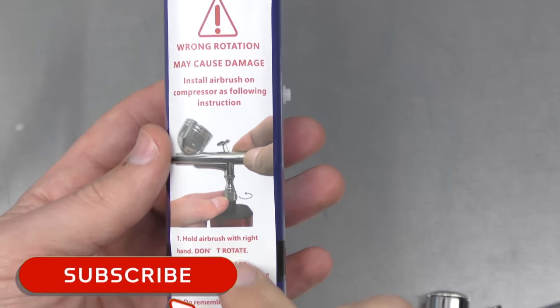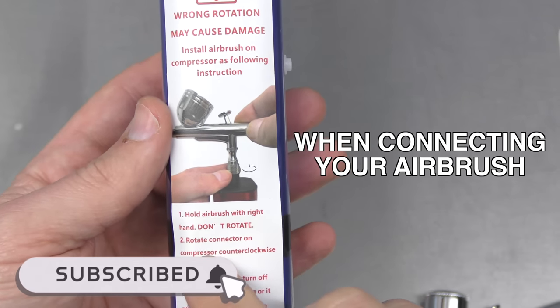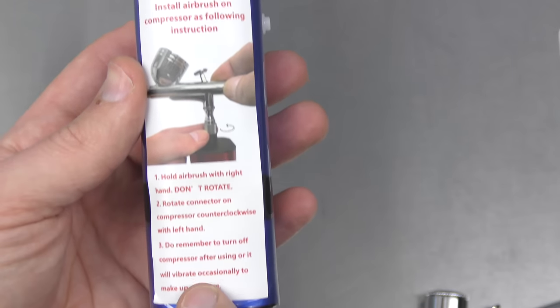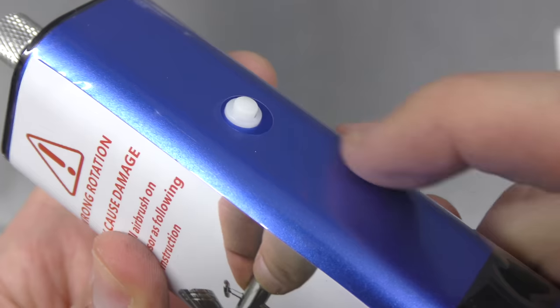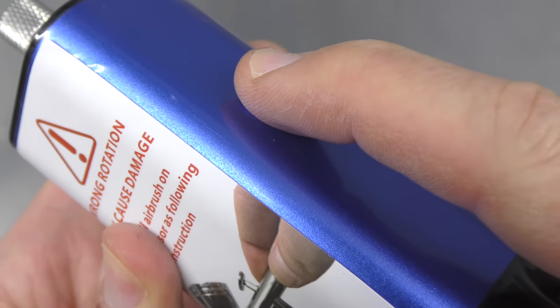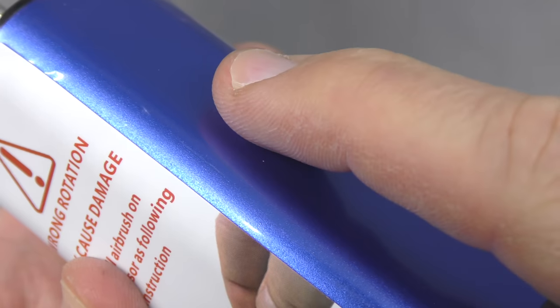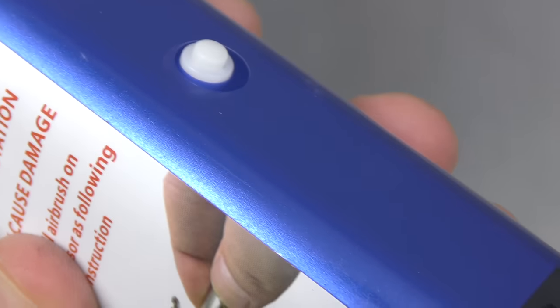You can see the warning label on here is just telling me to make sure that I rotate it the right way around and to remember to turn off the compressor. So you can see there's a little button here. You press that down to activate the battery and shut it off again.